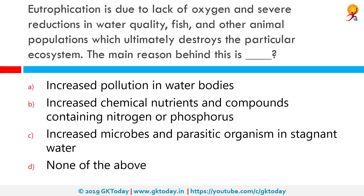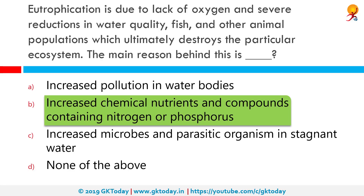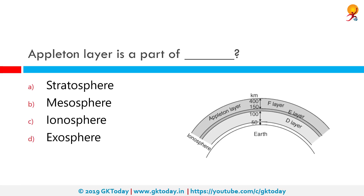Eutrophication is due to lack of oxygen and severe reduction in water quality, affecting fish and other animal populations, which ultimately destroys the particular ecosystem. The main reason behind this is increased chemical nutrients and compounds containing nitrogen or phosphorus. Eutrophication, or hypertrophication, is when a body of water becomes overly enriched with minerals and nutrients, inducing excessive growth of plants and algae. This process may result in oxygen depletion of the water body.